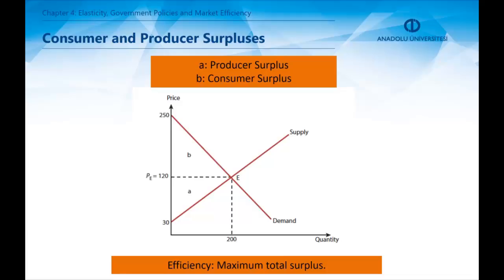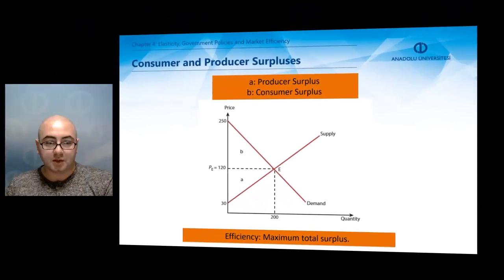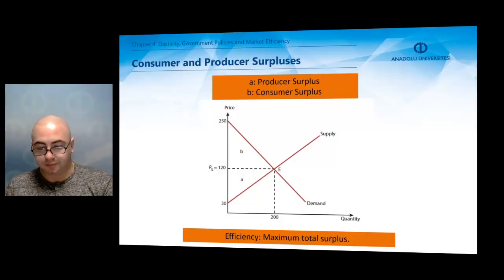The surplus areas are shown in the illustrations as A and B. The important thing to know here is that any intervention in the market system causes these surpluses to decrease, causing the market to become inefficient.